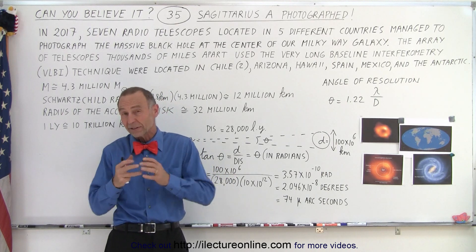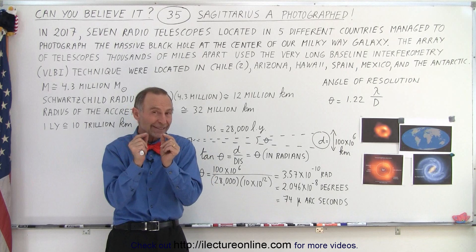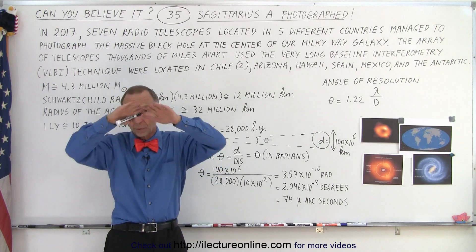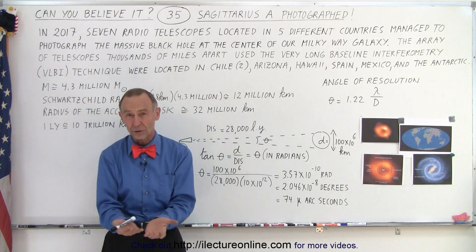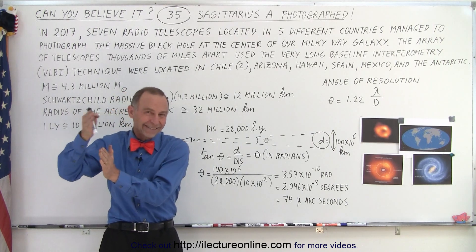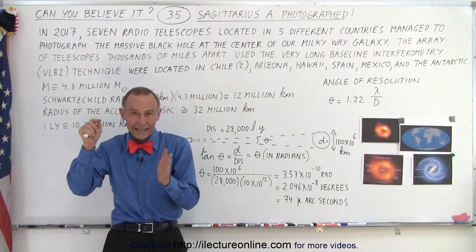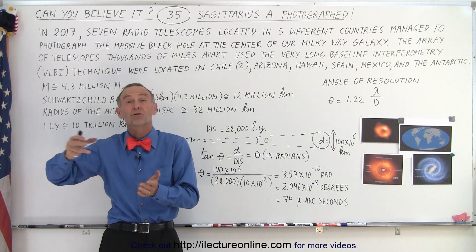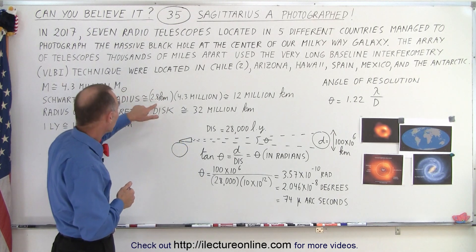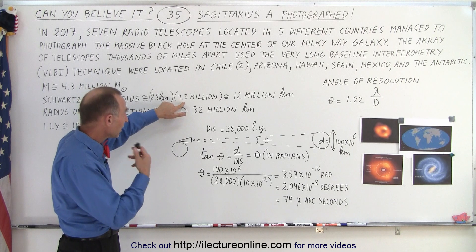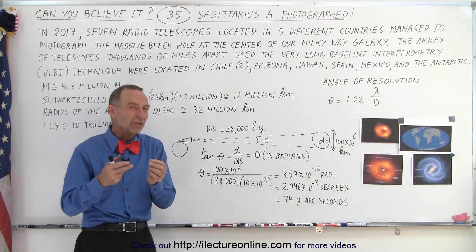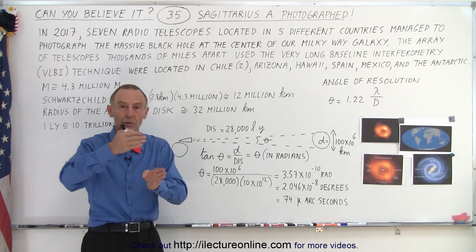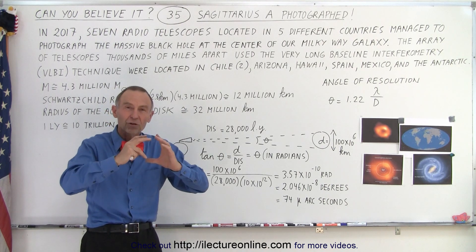Black holes, even though they're humongously massive, are actually very tiny in size. For every solar mass, the Schwarzschild radius — which is the radius of the event horizon where light cannot escape — is roughly about 2.8 kilometers. So I did a quick calculation: 2.8 kilometers times 4.3 million solar masses, which means the radius is 12 million kilometers. That is actually smaller than the distance from the Sun to Mercury, so it's a very small object.